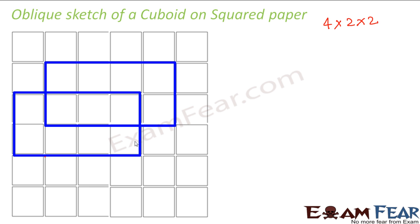Now we just connect the front and back faces with diagonal lines — the vertex of this rectangle connected to the vertex of that rectangle, this corner with this corner, this corner with that corner. Once you do that, you see it as a cuboid. You are not sure of the exact measurements, but when you look at this picture it resembles a cuboid. That is an oblique sketch.